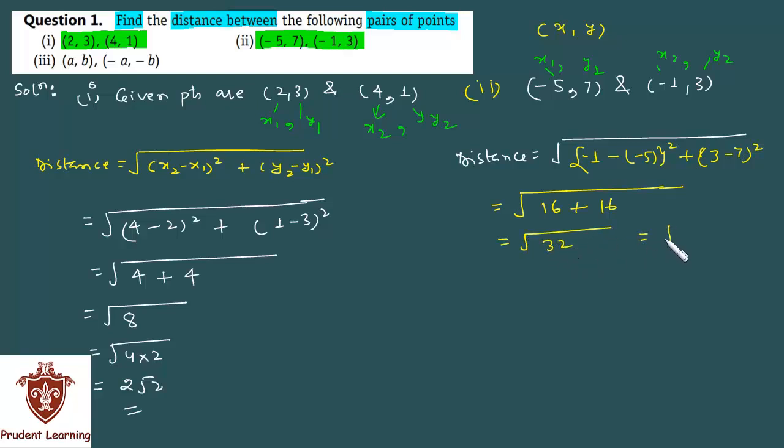16 plus 16 equals 32, which you can write as 16 into 2. The square root of 16 is 4, and 2 remains under the root. So in the second section, the distance between the given points is 4 root 2.